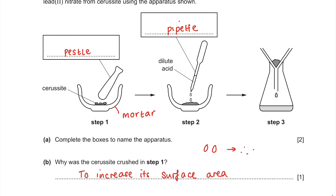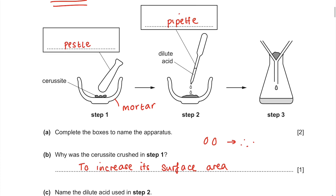Name the dilute acid used in step 2. The clue here is the fact that we're making nitrate. So in order to produce a nitrate, we need nitric acid.